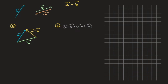Negative B is the vector parallel to B with the same magnitude but pointing in the opposite direction. To draw A plus negative B, I start at any point and draw vector A. Then from the head of vector A, I draw the vector negative B. The vector A plus negative B is the vector joining the tail of vector A to the head of negative B — that's my vector A plus negative B, or simply A minus B.